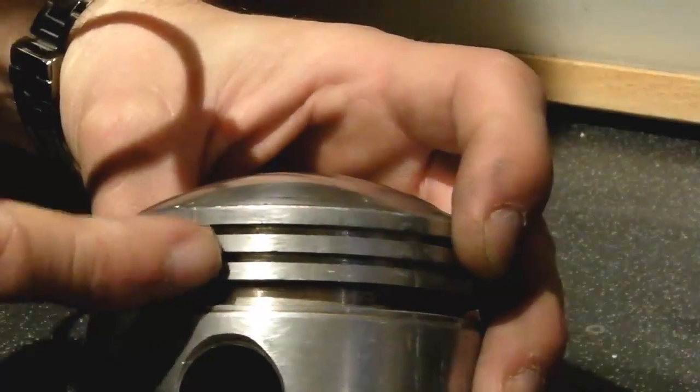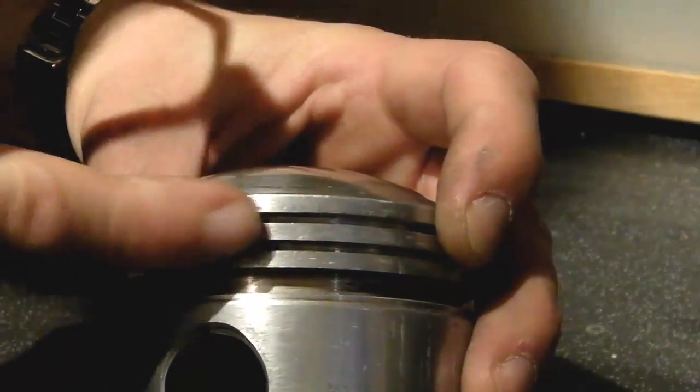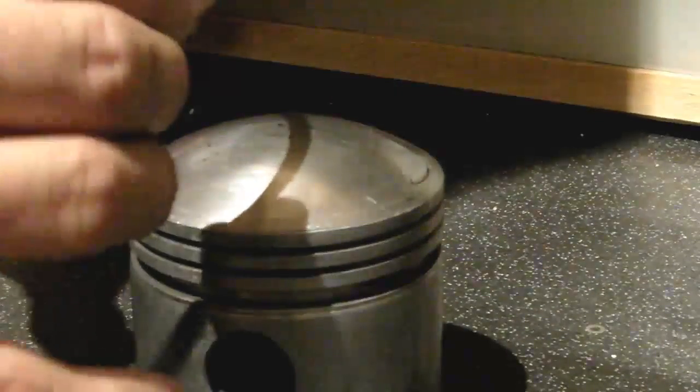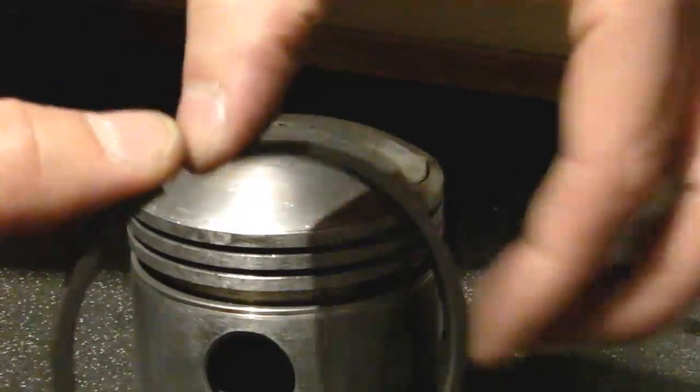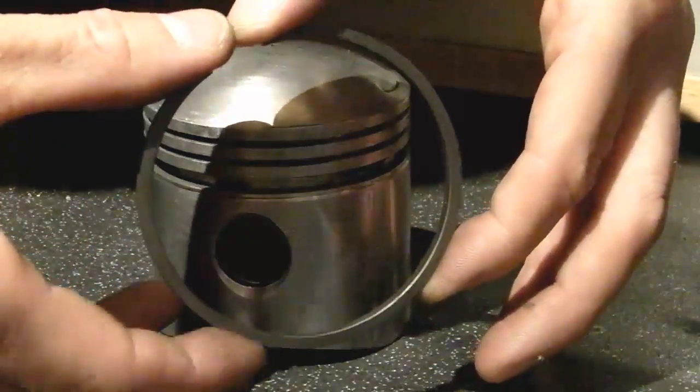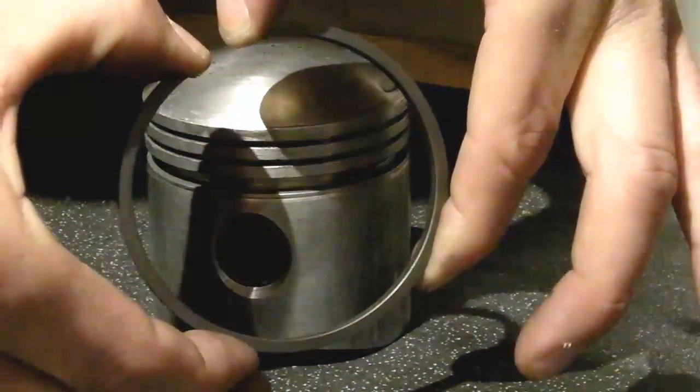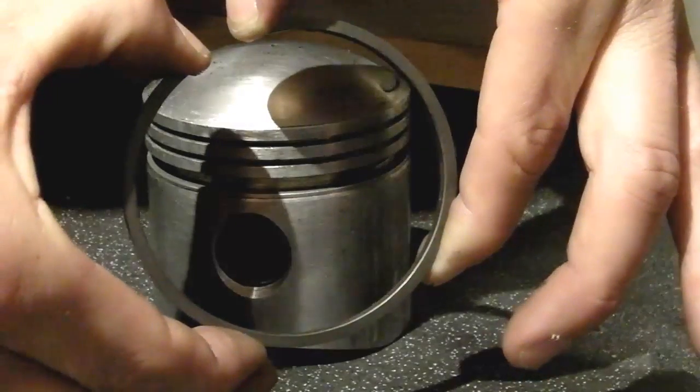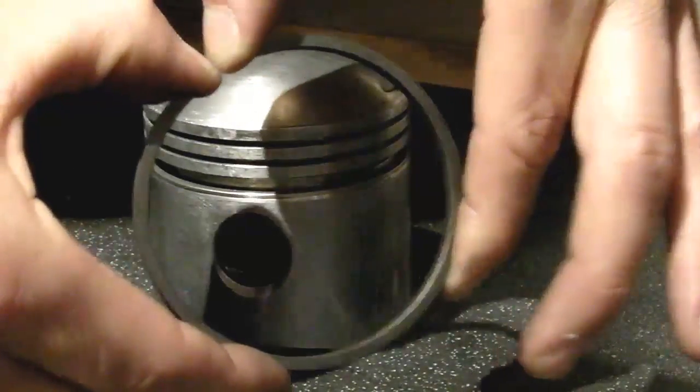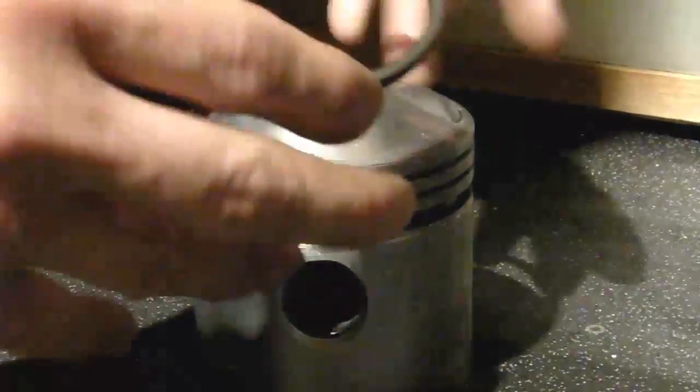A two-stroke engine will typically just have two scraper rings, sometimes just one depending on the bike in question. So to fit the ring, you need to hold it like so, thumbs at the gap there, and then these fingers down here supporting it. You need to spread it as much as you can but being very careful that you don't exert too much force all at once.